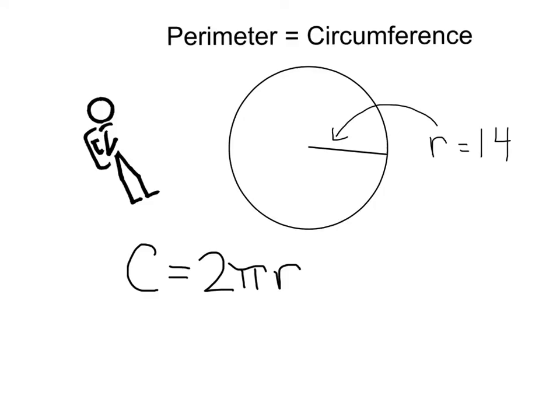Lastly, let's take a look at the perimeter of a circle. Now circles are so special, the perimeter has its own name, and we call it the circumference.